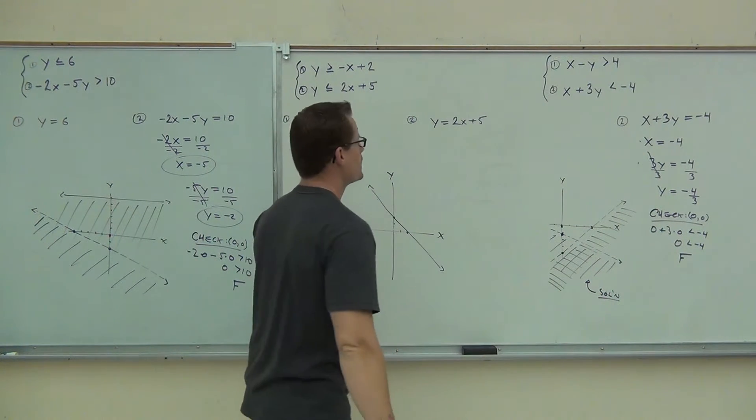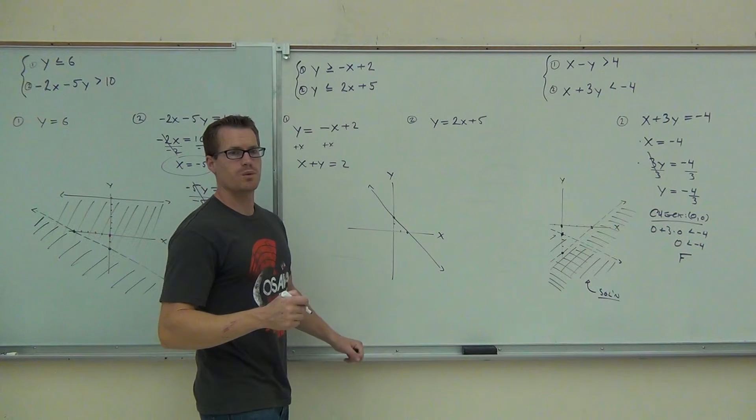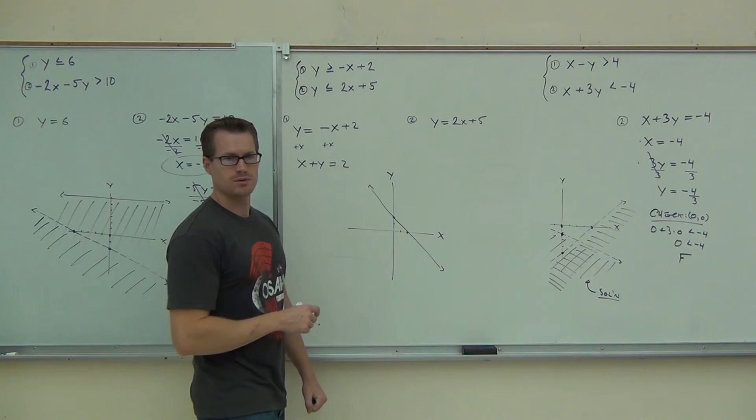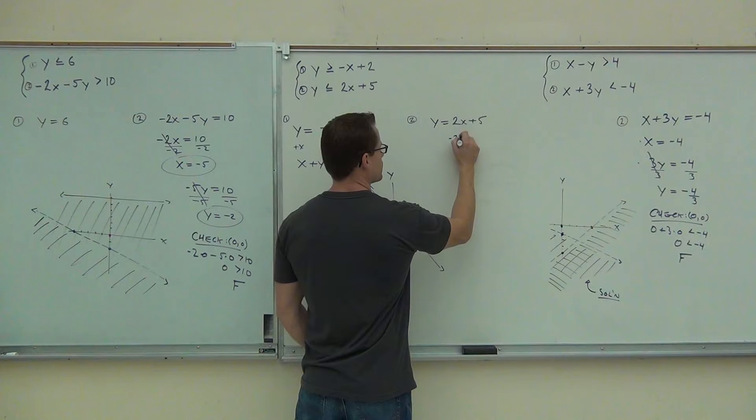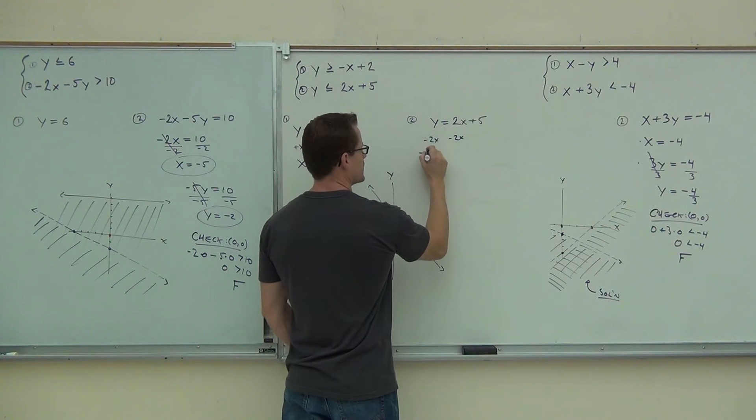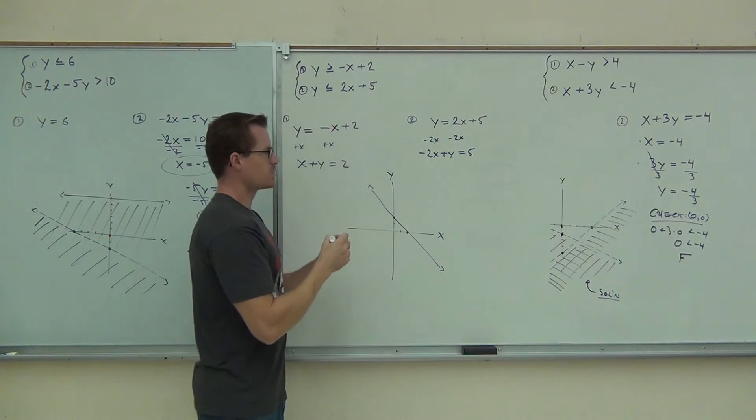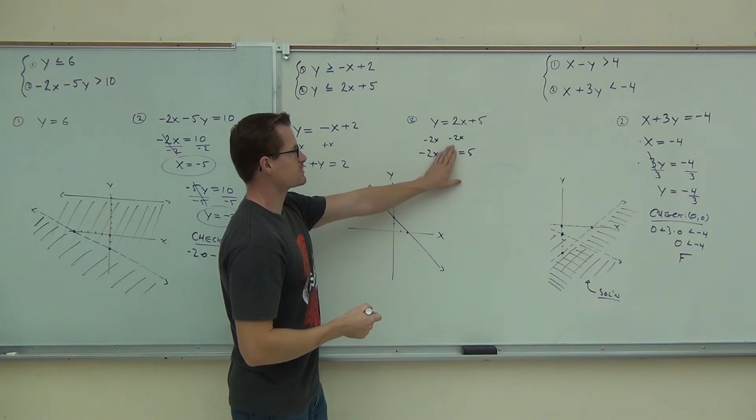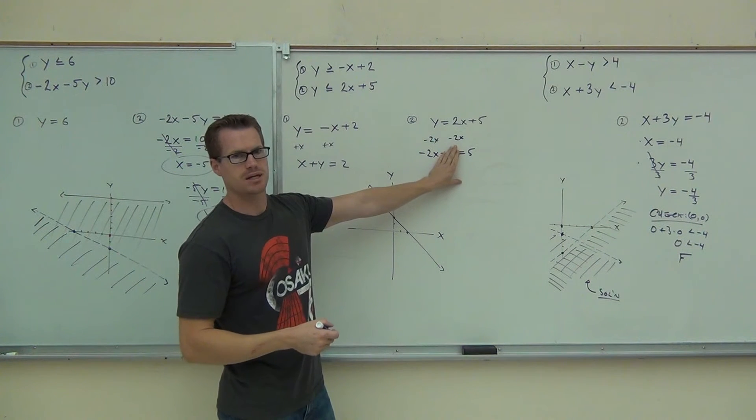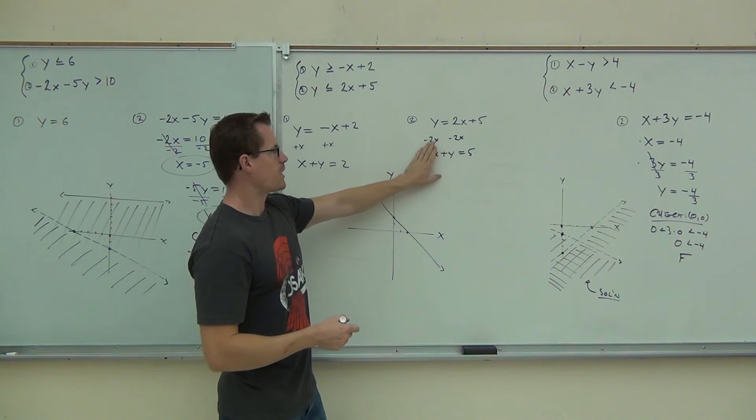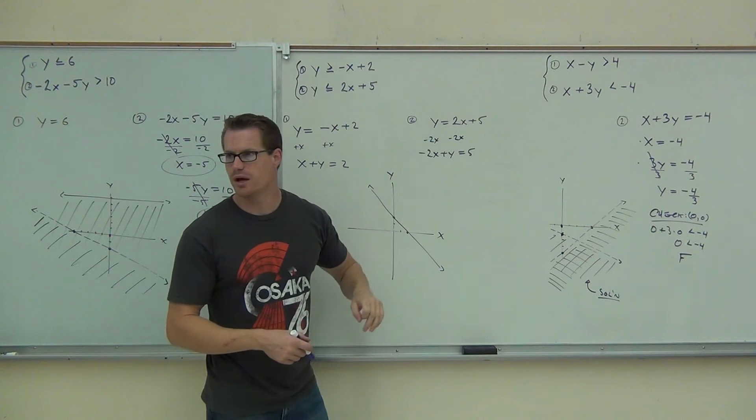Same thing would happen here. If you wanted the cover-up method, what would you have to do? Yeah, you would do that. Negative 2x plus y equals 5. Here, it would say that your x-intercept is negative 5 halves. Negative 5 halves is negative 2 and a half. That's okay. Y-intercept is 5. You could graph that on your line.